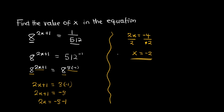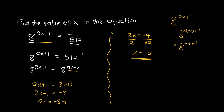So this becomes my answer. What it means is that if I substitute the value of negative 2 in here, the answer should equal the right-hand side. So if x equals negative 2, taking my left-hand side I have 8 raised to the power 2x plus 1, which equals 8 raised to the power 2 times negative 2 plus 1, giving negative 4 plus 1, which is negative 3.